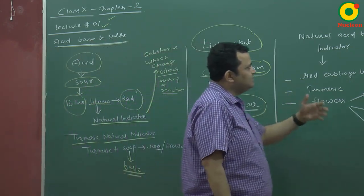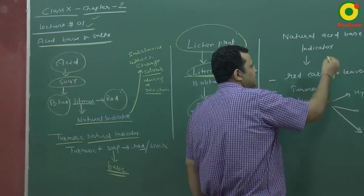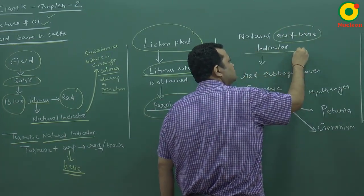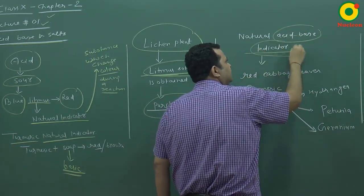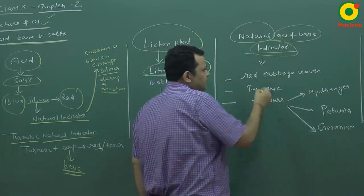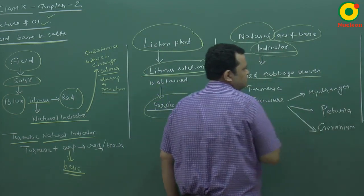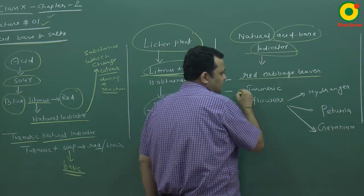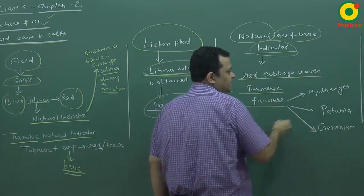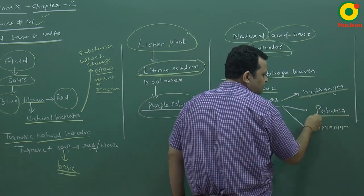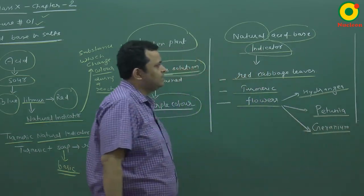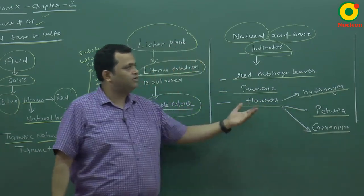Now let's talk about other natural acid-base indicators. You have understood that if there is an acid-base reaction, the indicator shows a color change. Red cabbage leaves are a natural indicator; turmeric is another one. These plants can act as acid-base indicators and they are found in nature.